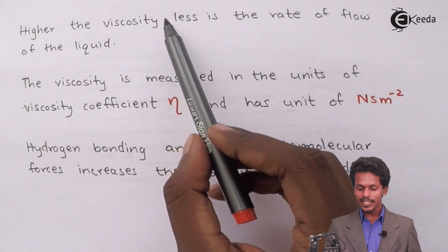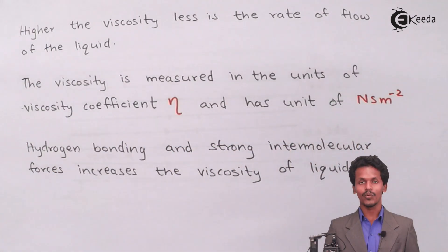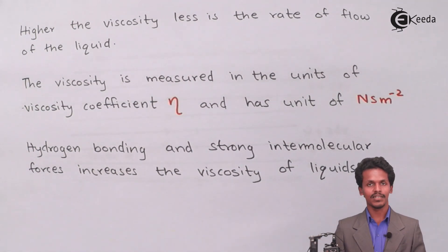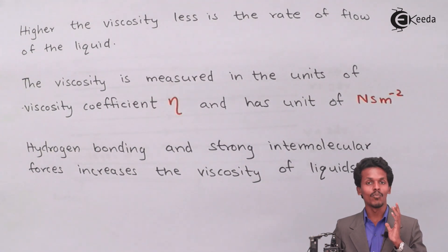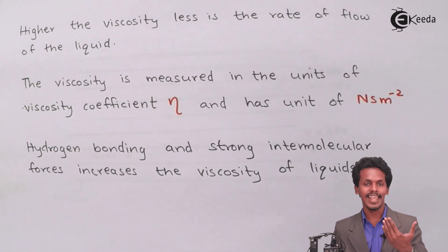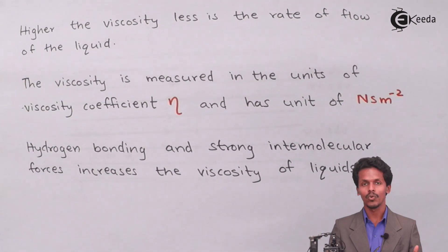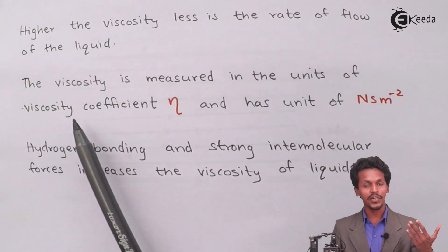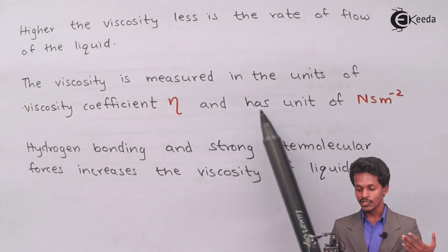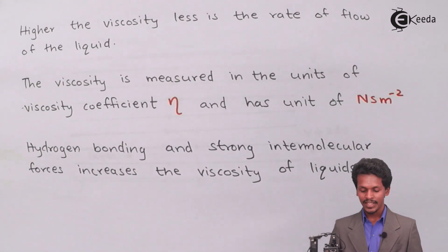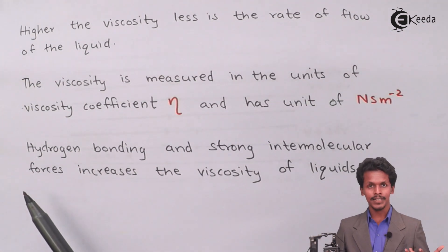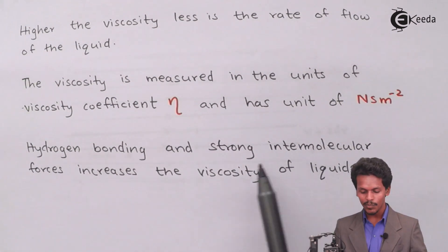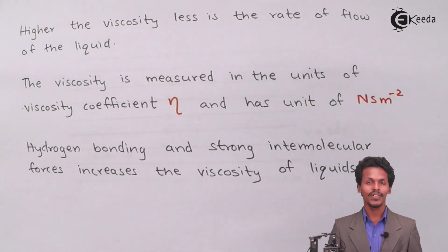Higher viscosity means a lower rate of flow of the liquid. Viscosity is measured using the viscosity coefficient mu, with units of Newton-second per meter squared. Liquids with hydrogen bonding and strong intermolecular forces have higher viscosity.